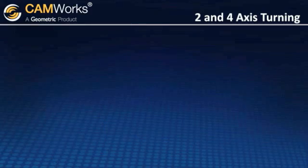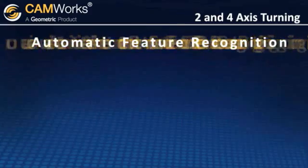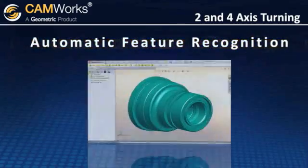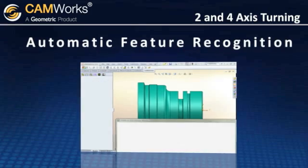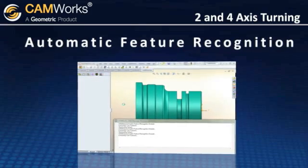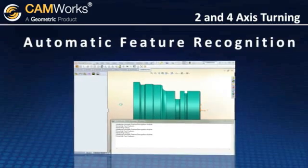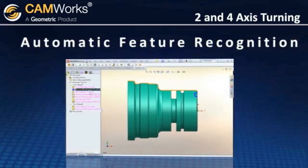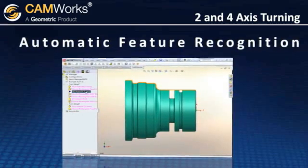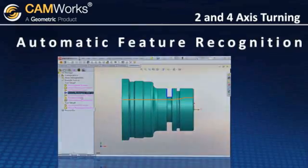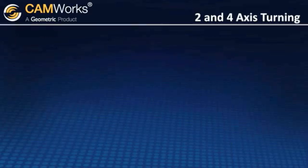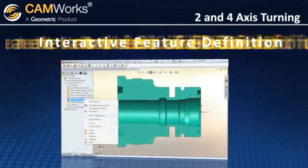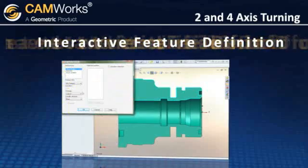CamWorks includes its powerful automatic feature recognition technology, which saves you time by analyzing the model and defining turning machinable features such as the OD and ID of the part, front face, and grooves. If you would prefer to define features manually, you can also use the CamWorks Interactive Feature Definition Wizard, which makes it quick and easy.